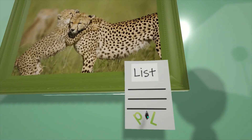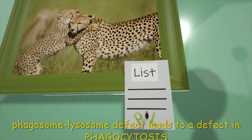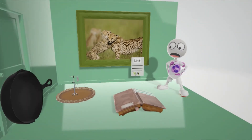There's a P and an L on the list, and the knife is going right through them. This helps us remember there's a problem with phagosome-lysosome fusion due to microtubule dysfunction, which leads to a defect in phagocytosis that relies on this phagosome-lysosome fusion.